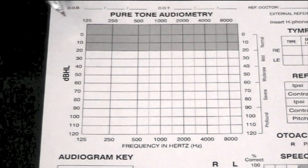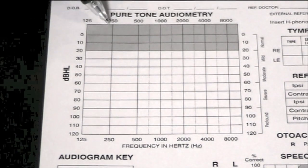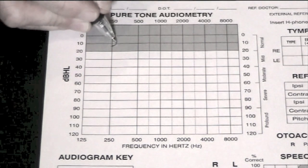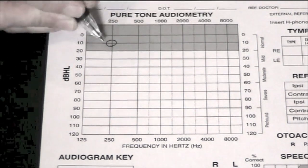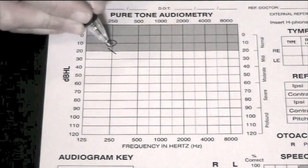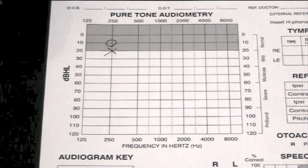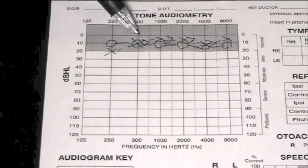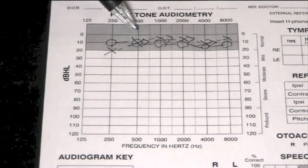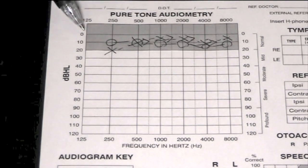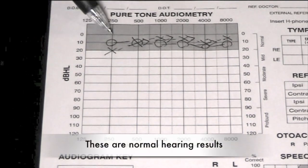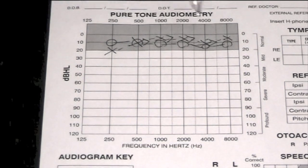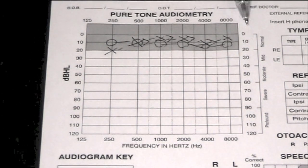As the test progresses we record your responses for each frequency along the graph. The circles are for the right ear. The crosses are for the left ear. We also record some brackets, which is another part of the hearing test. On this hearing test you can see the marks are all within the shaded region — we would say this person's hearing is within the normal range.